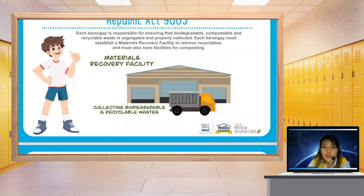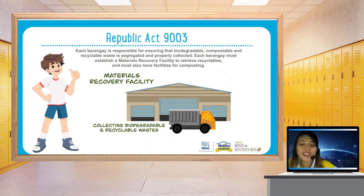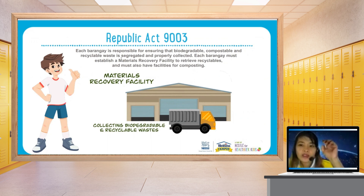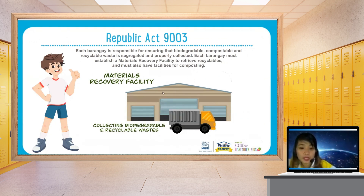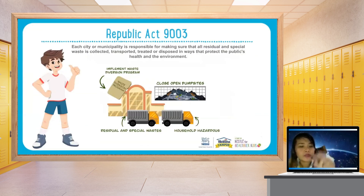Republic Act 9003 also states that each barangay is responsible for ensuring that biodegradable, compostable, and recyclable waste is segregated and properly collected. Each barangay must establish a Materials Recovery Facility to retrieve recyclables and must also have facilities for composting materials. As we can see here, a Materials Recovery Facility collects biodegradable or recyclable waste.